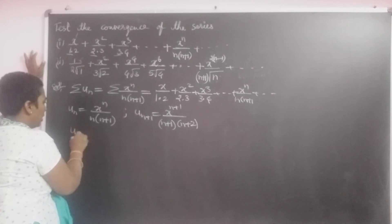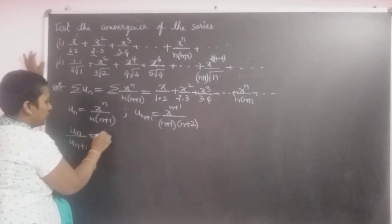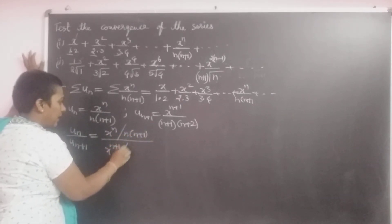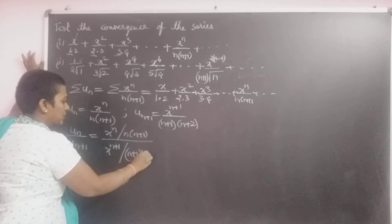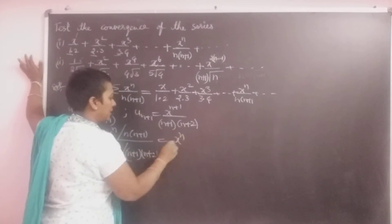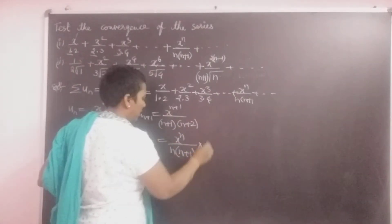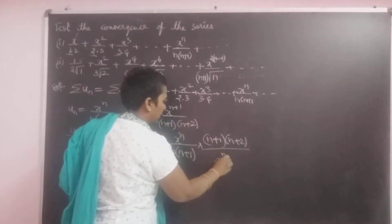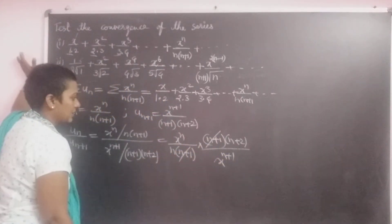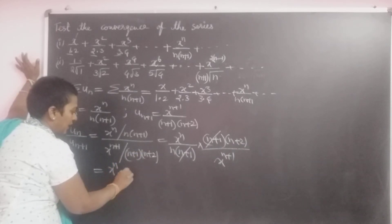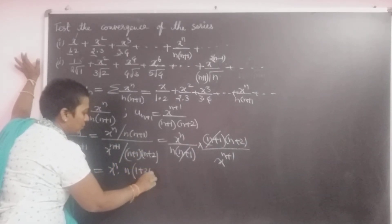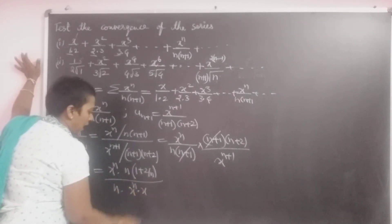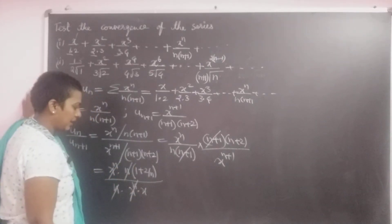To find the ratio: uₙ/uₙ₊₁ = [x^n / (n(n+1))] ÷ [x^(n+1) / ((n+1)(n+2))]. This equals x^n · (n+1)(n+2) / (n(n+1) · x^(n+1)). The (n+1) terms cancel, x^n cancels with part of x^(n+1), and n cancels, leaving (n+2)/(n·x).